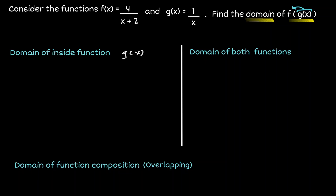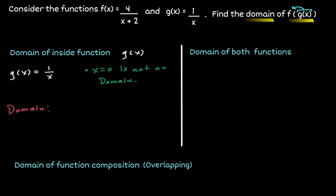g(x) is the function we plug inside f. The domain is all x values we are allowed to use, but notice the variable x is in the denominator. We can never divide by 0, therefore x equals 0 is not in our domain. We can use any other x value, so the domain is all x values except 0: from negative infinity to 0, not including 0, union 0 to positive infinity.